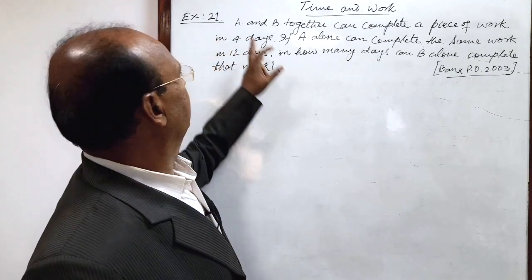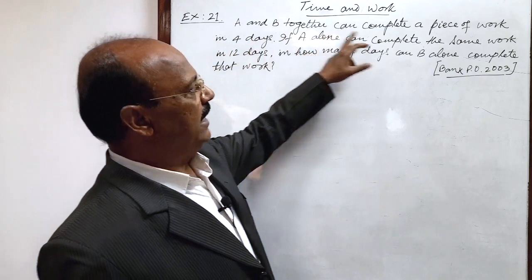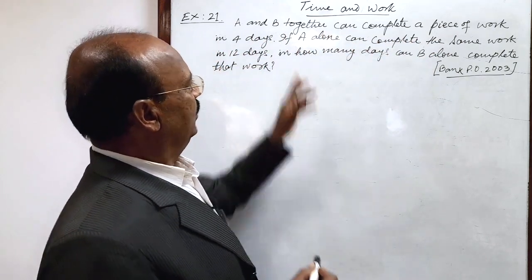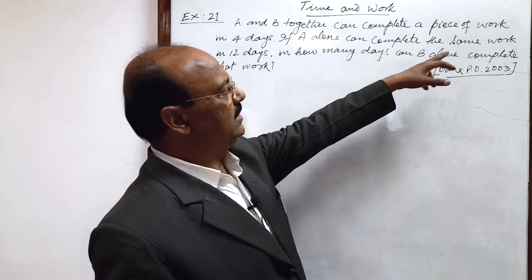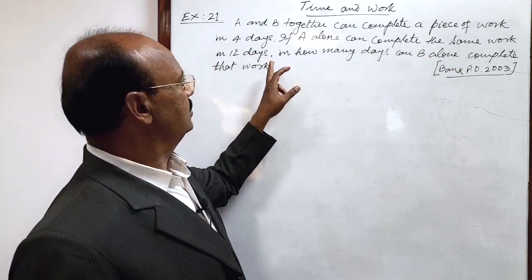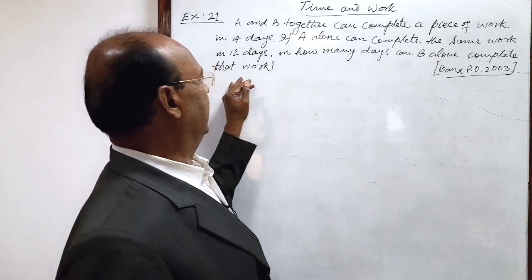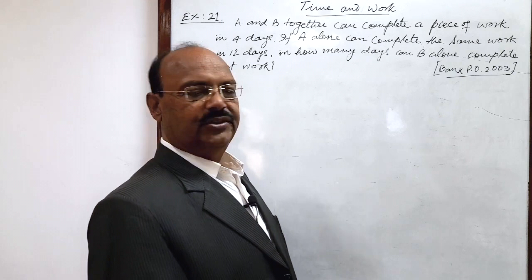Here question is: A and B together can complete a piece of work in four days. If A alone can complete the same work in 12 days, in how many days can B alone complete that work? Let us see the solution.